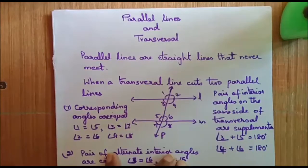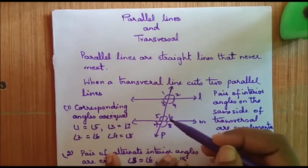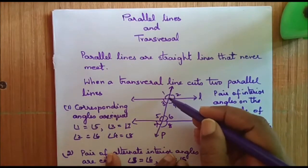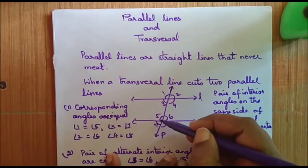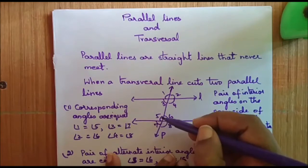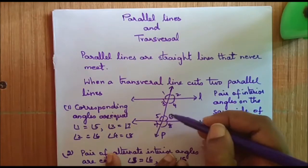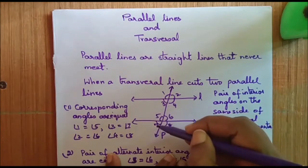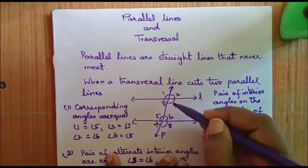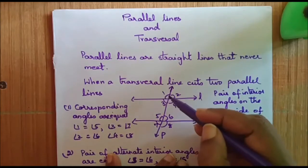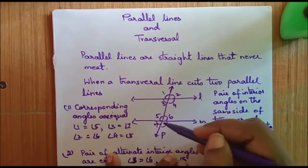Corresponding angles are equal. Corresponding angles are those that lie on the same side of the transversal. Angle 1 and angle 5 are corresponding angles. Angle 2 and angle 6 are equal, angle 3 and angle 7 are equal, and angle 4 and angle 8 are equal.